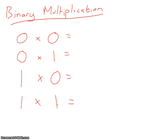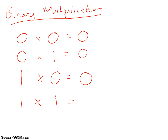We're going to have a quick recap on binary multiplication. As with addition, there are a few simple rules to remember. The nice thing about binary multiplication is that it's exactly the same as in denary. Zero times zero is zero — when you multiply anything by zero it's always going to give you zero. So zero times one is zero, one times zero is zero, and the only result that gives us a one is one times one, which is one.